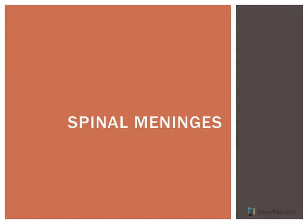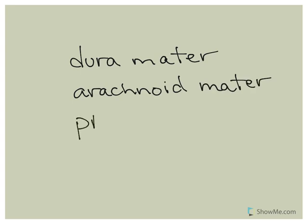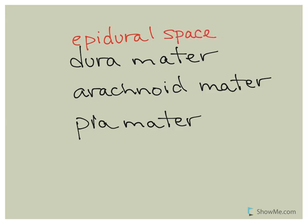This recording is the continuation of a previous recording where I started talking about the cranial meninges. As a reminder, your meninges are membranes, and from outermost to innermost you have the dura mater, the arachnoid mater, and the innermost is the pia mater. We also have different spaces: the epidural space, which is above the dura mater, and the subdural space, which is between the dura mater and the arachnoid mater.